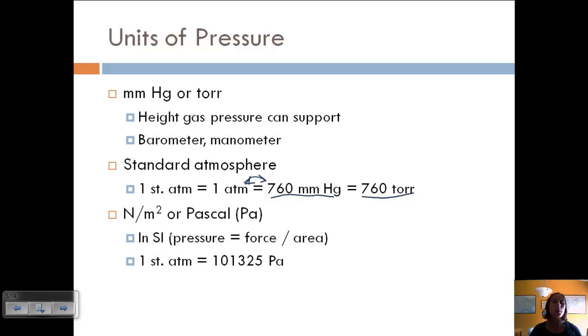In SI, pressure is equal to force over area, and so one standard atmosphere is 101,325 pascals. So here's another conversion factor that you can use to go from pascals to atmospheres, and then up to millimeters of mercury or torr if you wanted to.